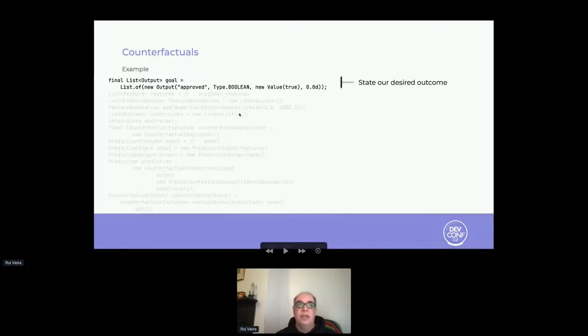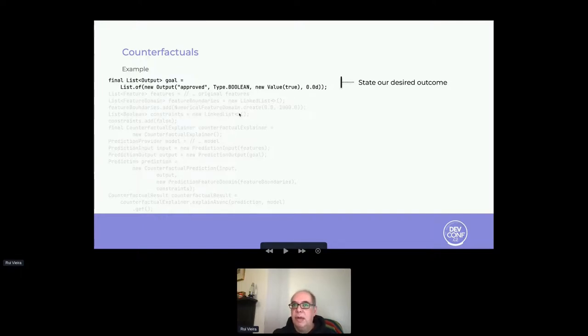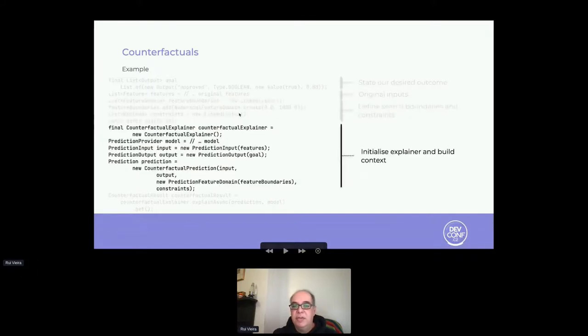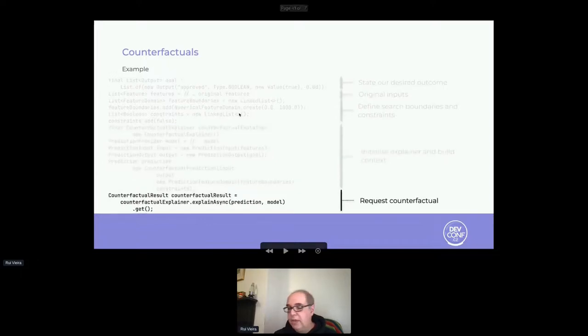Again, just a quick example. Explainers in TrustyAI are quite flexible in the sense they accommodate different types of predictive models. To request a counterfactual explanation, we define our goal in terms of the output features, feature types, goal value, minimum output probability. We pass the original features, the feature domains which include lower and upper bounds for numerical features or a collection of values for categorical features, and we explicitly set the ones that should be immutable. Finally, we request a counterfactual.